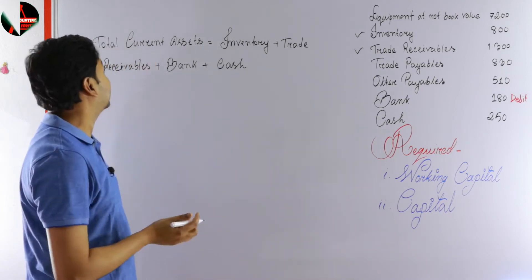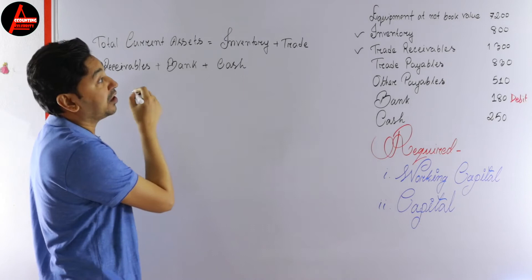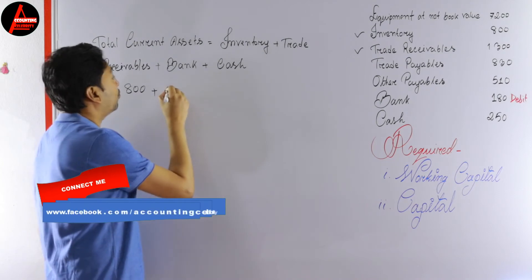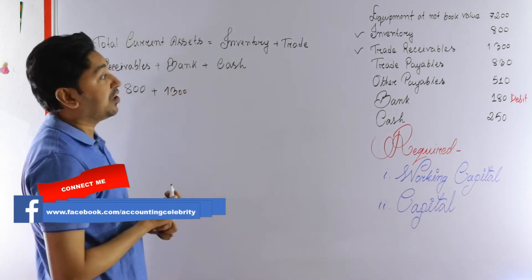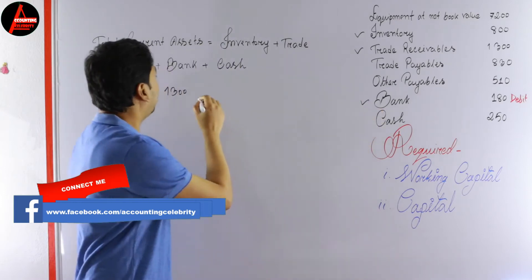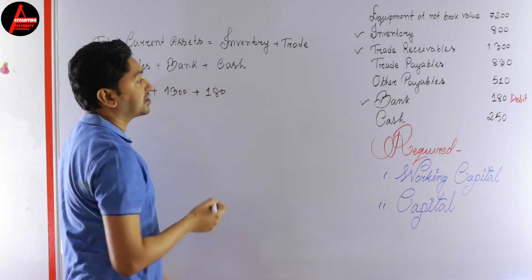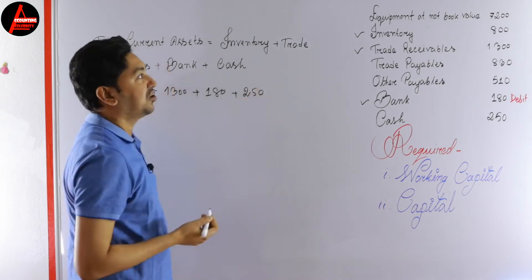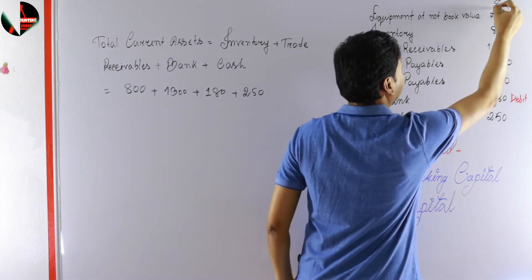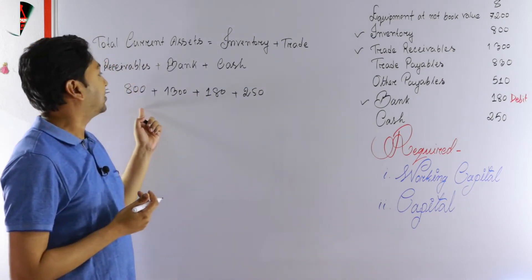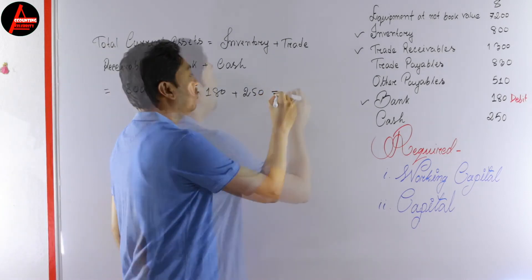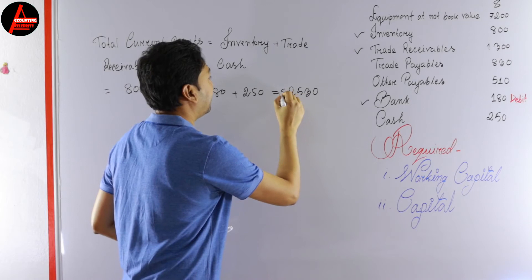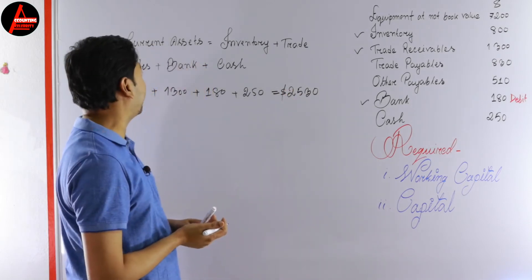Now we write the values for all current assets: inventory is $800, trade receivables are $1,300, bank is $180, and cash is $250. Adding all four values together gives us a total current assets figure of $2,530.